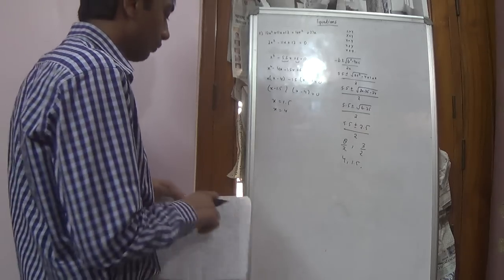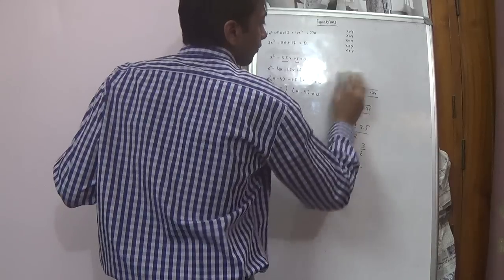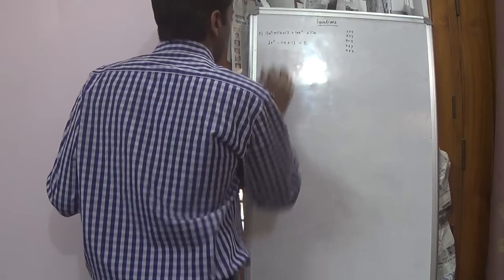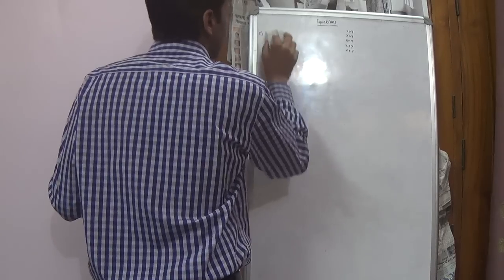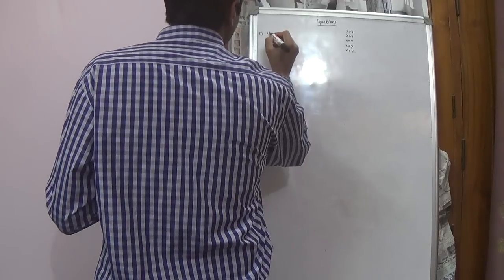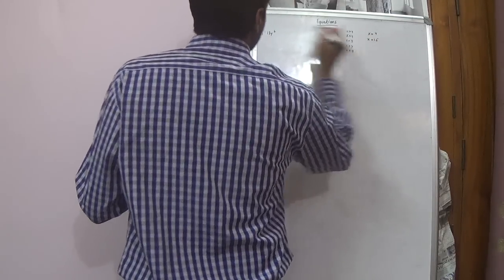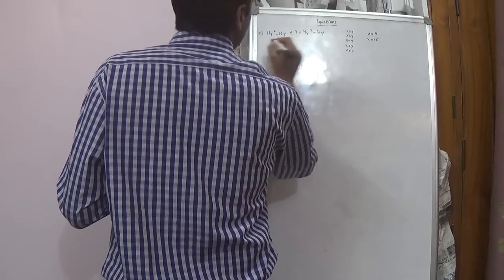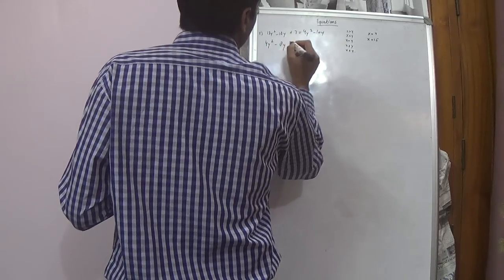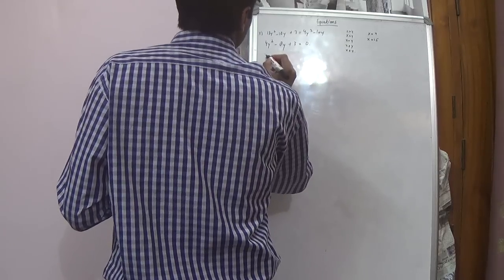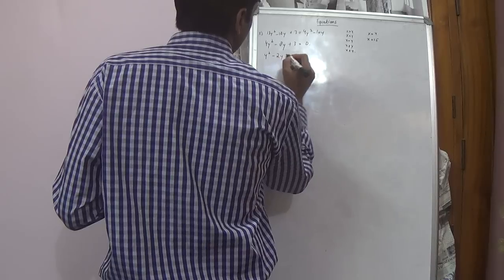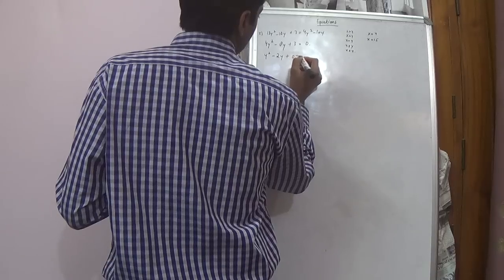Now we have to solve another equation based on y and then find the relationship. So x equals 4 and x equals 1.5. The next equation says 13y square minus 18y plus 3 equals 9y square minus 10y. Simplifying: 4y square, and bringing 10y here gives minus 8y plus 3 equals 0. Dividing by 4: y square minus 2y plus 0.75 equals 0.